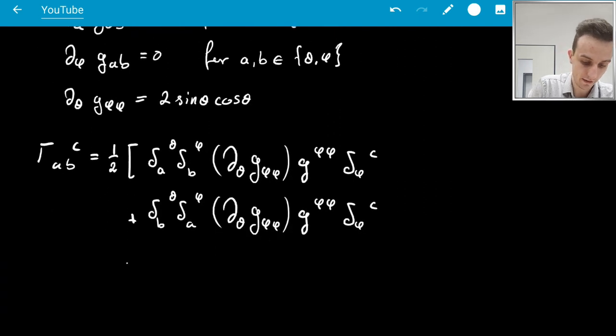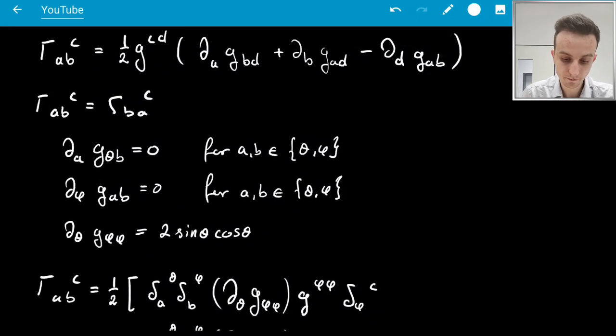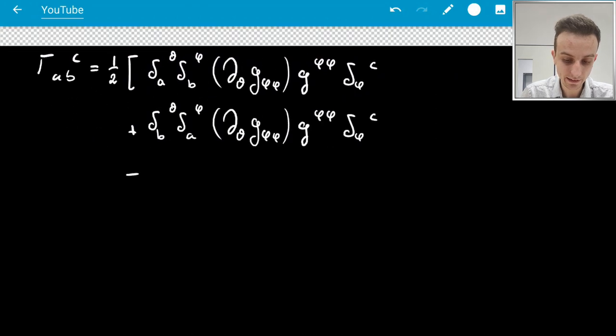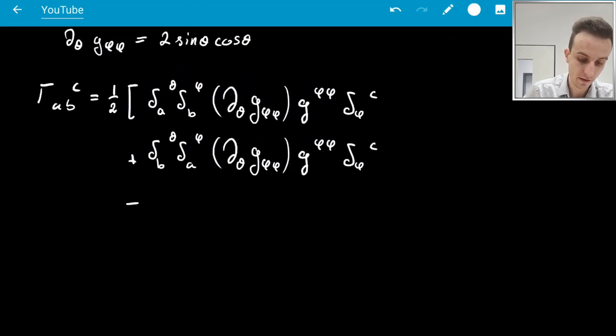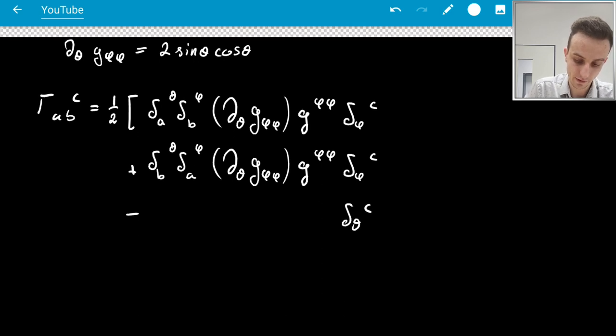And then I have the third term, so now D is what collapses to theta, which means that C collapses to theta, so I have something like this.